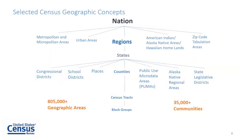The ACS provides data for more geographies on an annual basis than any other household survey. The image on this slide shows some of the geographies for which ACS data are produced and the hierarchical relationship between them. Lower geographic areas fit neatly within larger areas directly connected with lines. Congressional and state legislative districts fit neatly within states. The smallest geographic building block is the block group. The ACS's unique ability to report on a wide range of geographies is what gives it such a broad appeal.